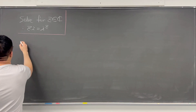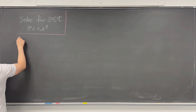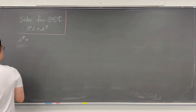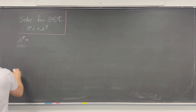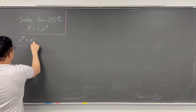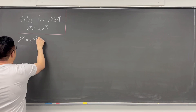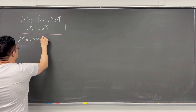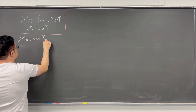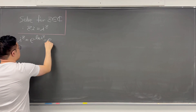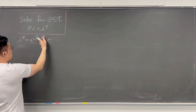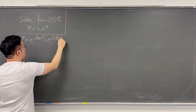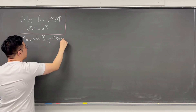So this i to the power of z on the right-hand side is rewritten as e to the power of ln of i to the power of z. That's the same as e to the power of z times ln of i.